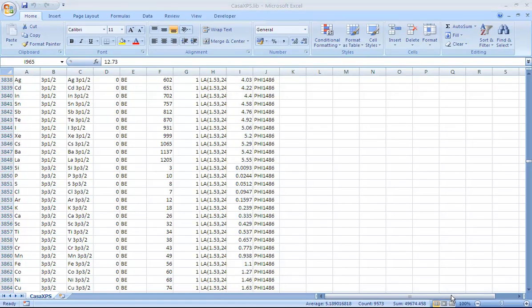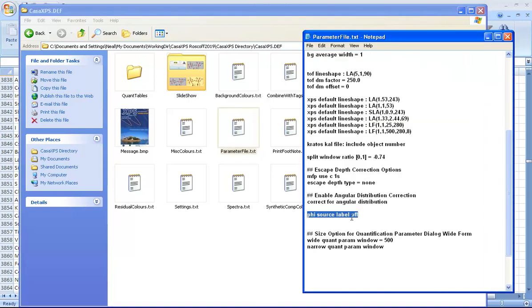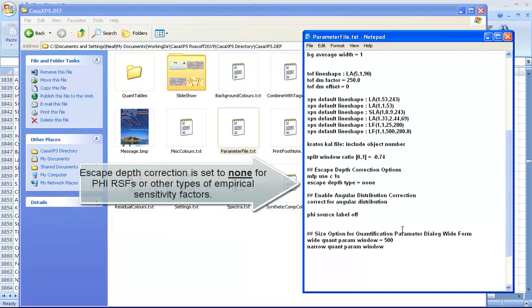When a VAMAS file is created by CASA XPS, it's possible to configure the source label that is entered into the VAMAS blocks. In the CASA XPS directory that contains the default files, CASA XPS.def, there's a file called parameter-file.txt. Parameter-file.txt includes an option where you can enter PHI source label or change it to PHI source label.